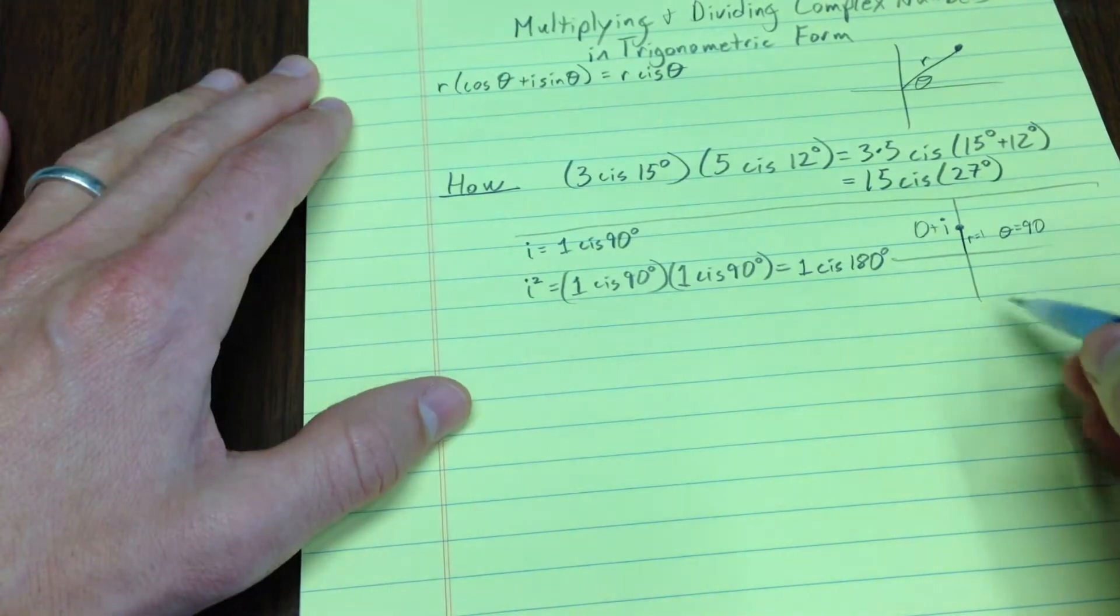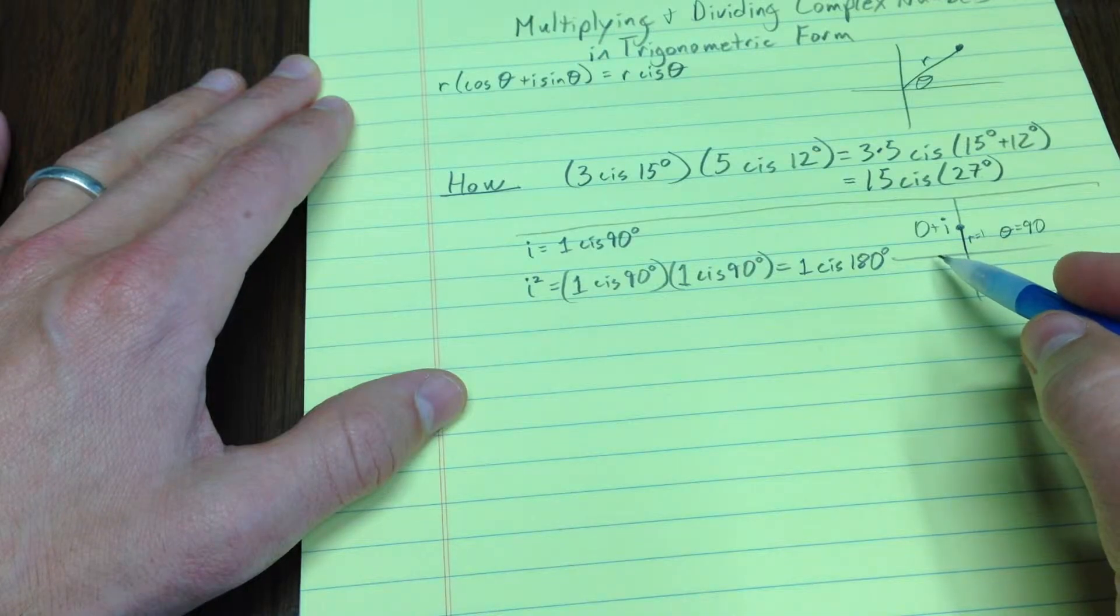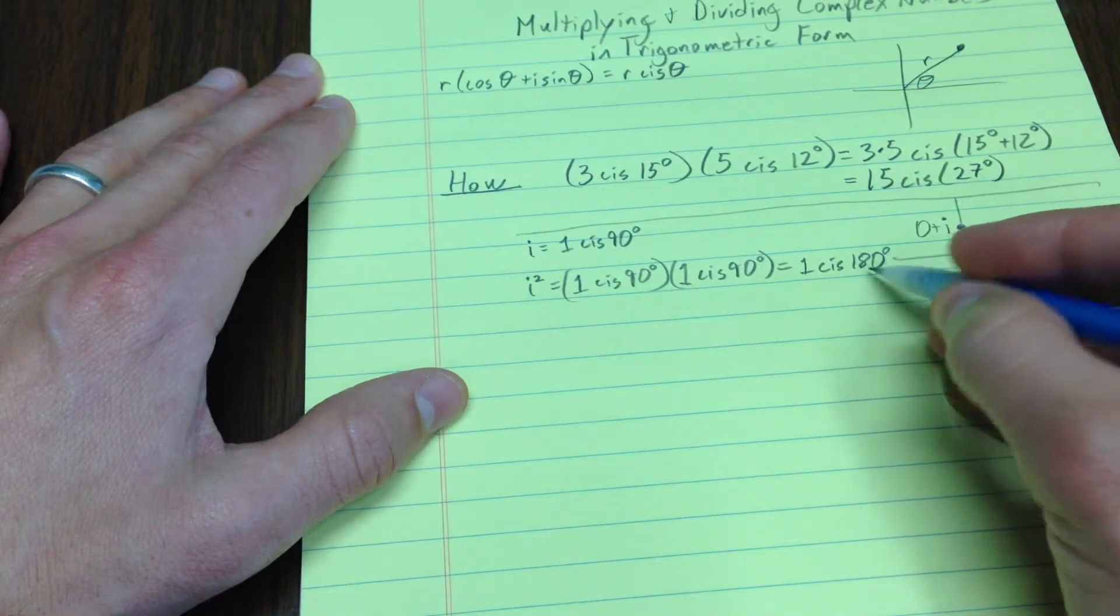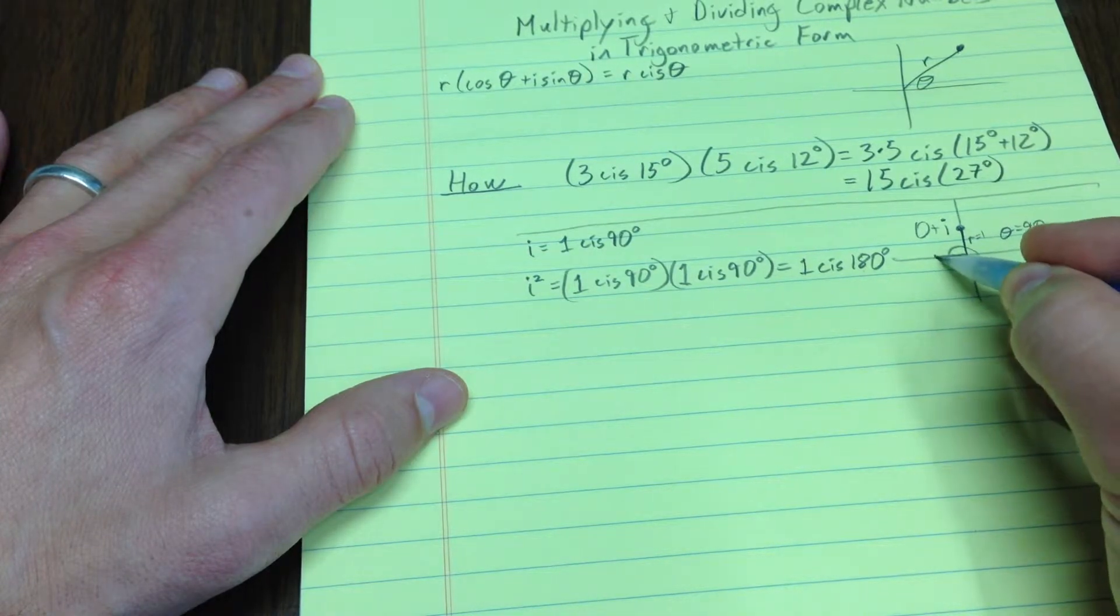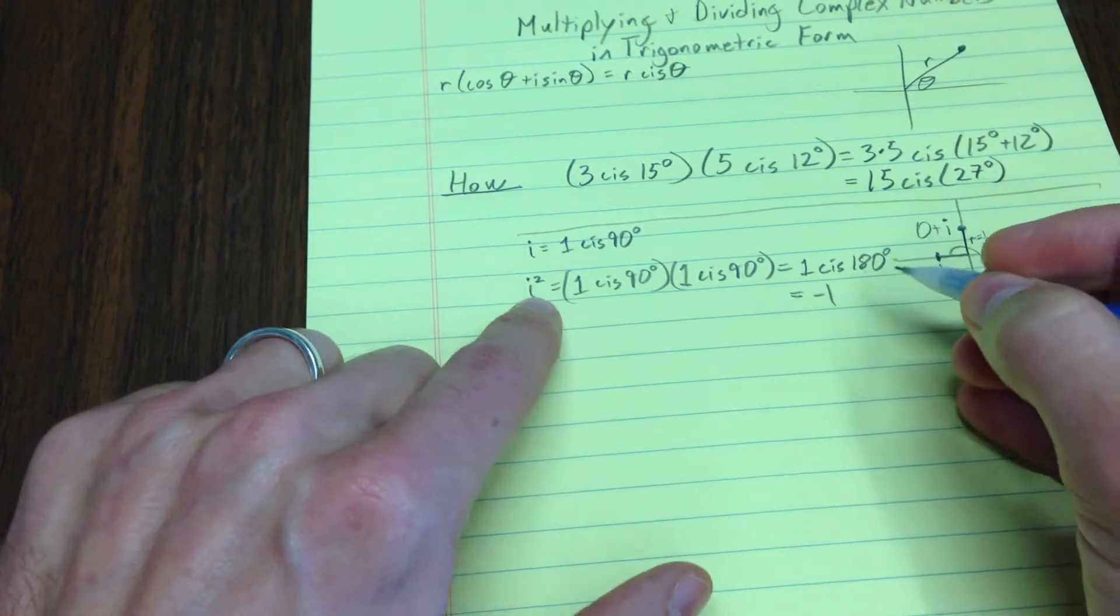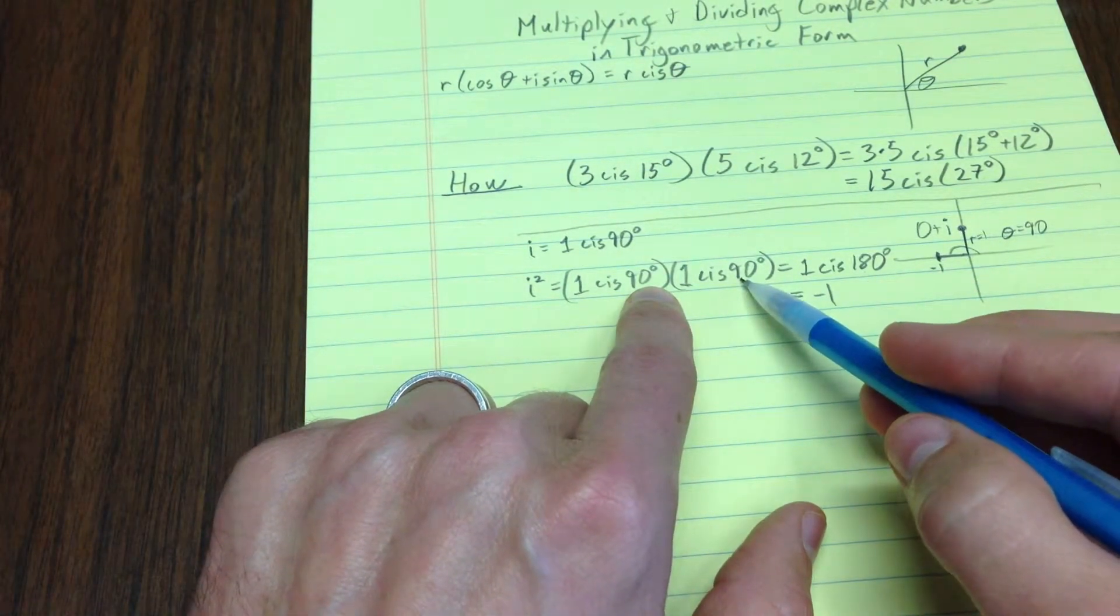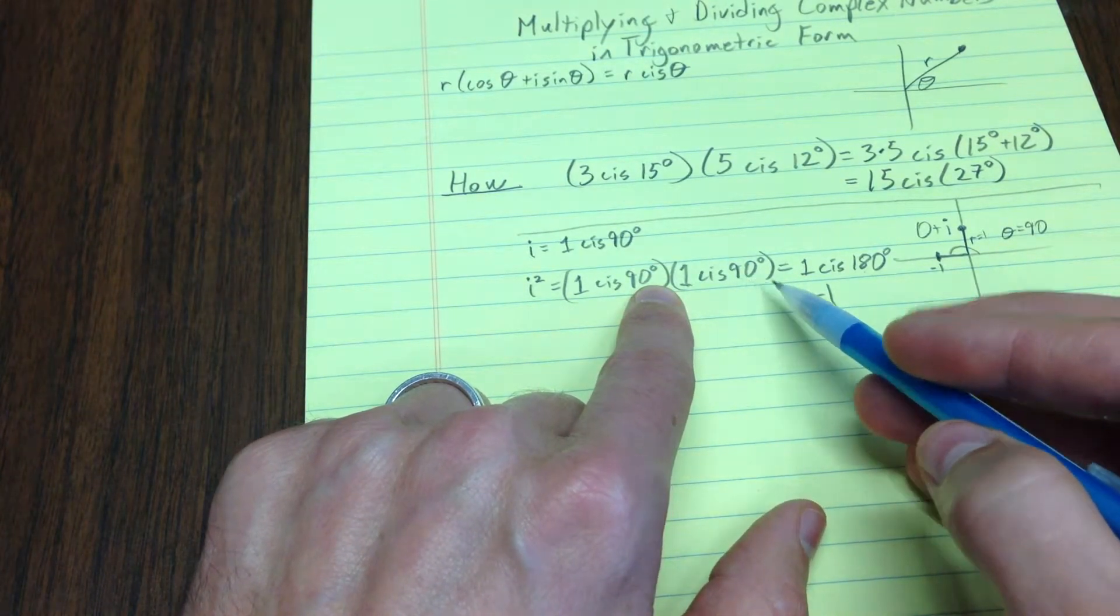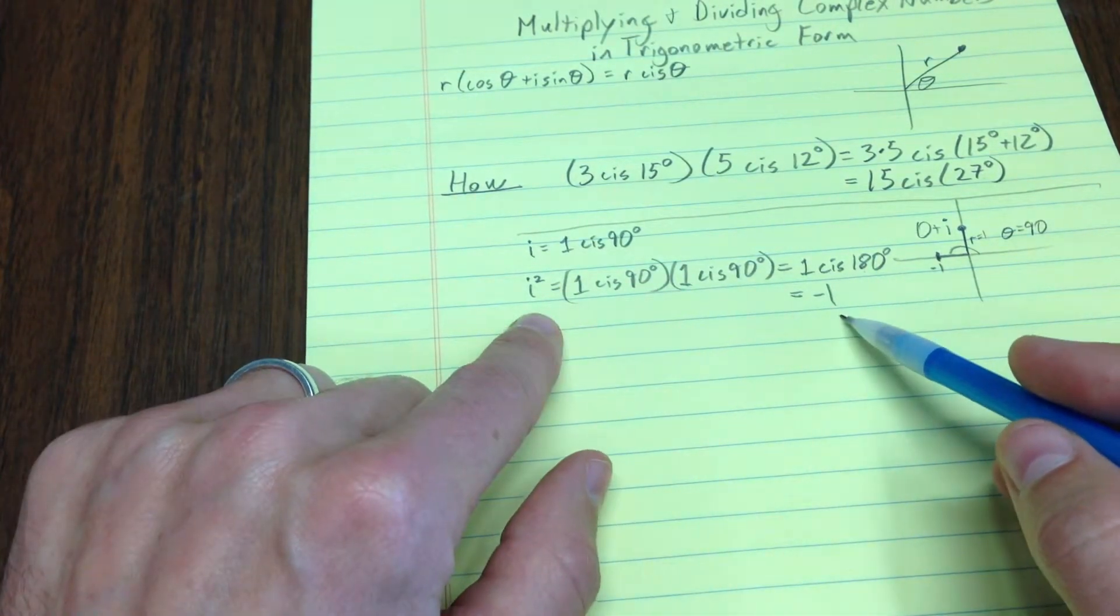Now, what is 1 cis 180? If you translate that back to reality, we have an angle of 180 degrees, that's over to this line, and then out 1, a distance of 1, takes me out to the point negative 1. And indeed, i squared equals negative 1, and exactly the tool that was needed was adding the angles. So it's really kind of cool when you multiply two complex numbers, what you really end up doing is adding the angles. That's the thing that works.